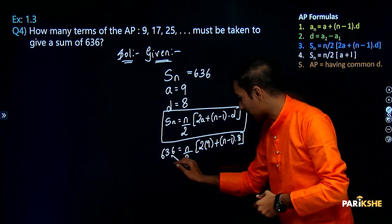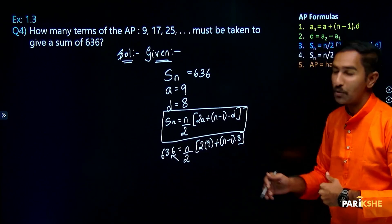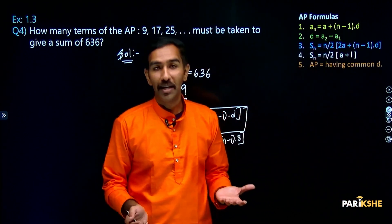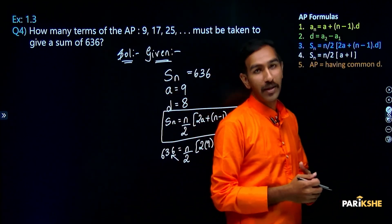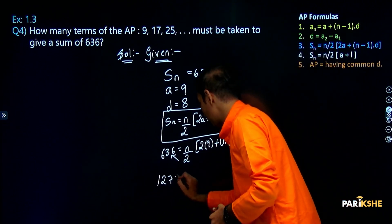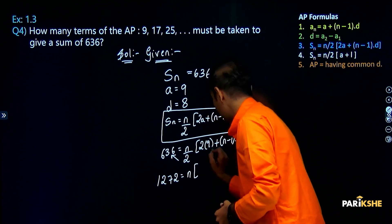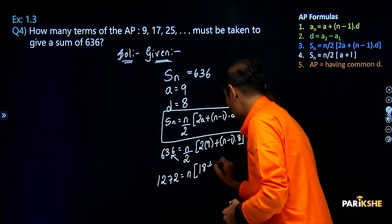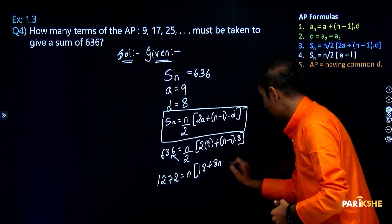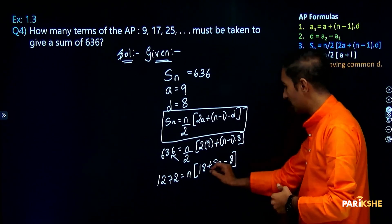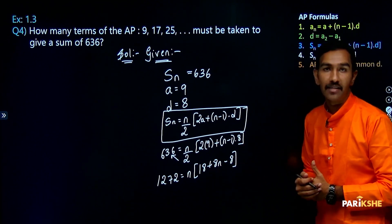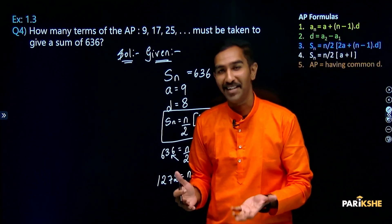Cross multiplying by 2: 636 into 2. 600 into 2 is 1200, 36 into 2 is 72, so 1272. So 1272 is equal to n of: 2 into a is 18, plus n into 8n, minus 8. Combining: 18 minus 8 is 10n plus 8n squared.